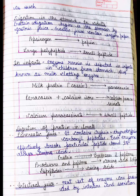In adults, pepsinogen is converted to pepsin, and large polypeptides are converted to small polypeptides. In infants, rennin is secreted from the stomach — also known as the milk clotting enzyme. Rennin is secreted in children and helps digest milk protein. Milk protein is changed to paracasein; paracasein mixed with calcium forms calcium paracasinate, which then breaks down into small polypeptides. This completes the stomach stage of protein digestion for both adults and infants.